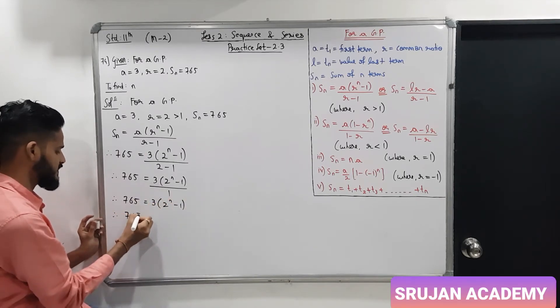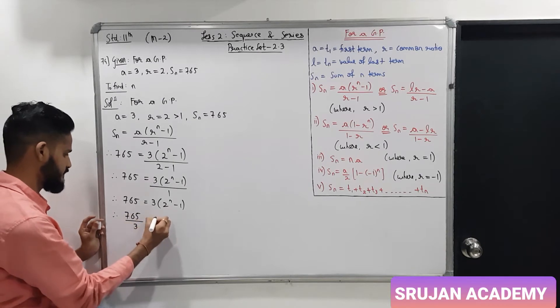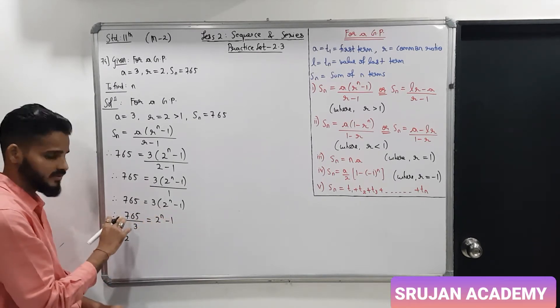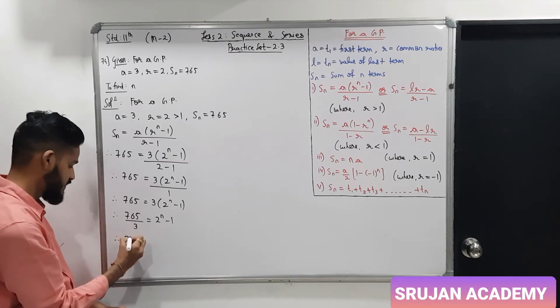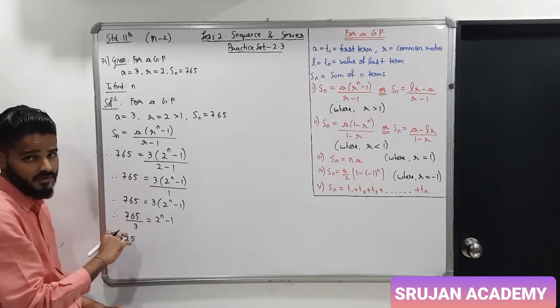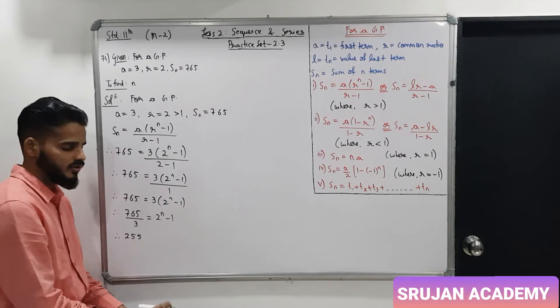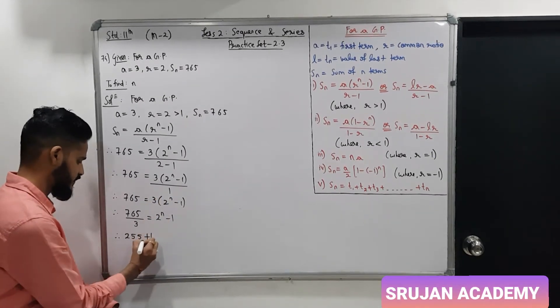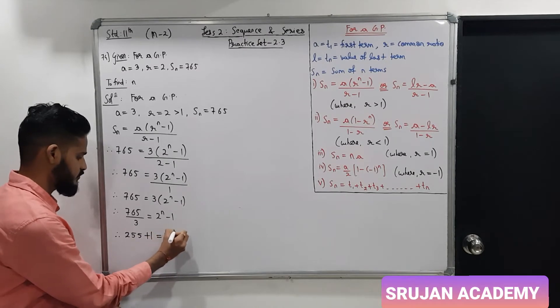3 multiplication right side, left side it will divide. 3 into 2 is 6, 1 remains 16. 3 into 5 is 15, 1 remains 3. And this minus 1 from right side to left becomes plus 1. So, 255 plus 1 equals 2 raise to n.